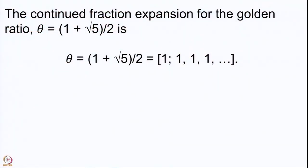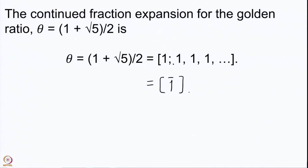Let us also recall that we have obtained the continued fraction expansion for the golden ratio θ = (1 + √5)/2. We noted that this is periodic because it simply repeats from the first step onwards. We can write it as [1; 1̄] because that is the way we denote a periodic expansion.